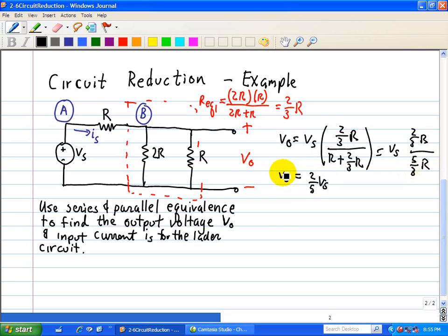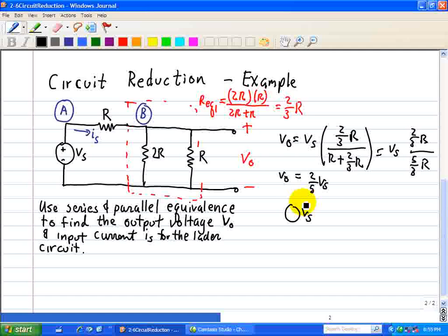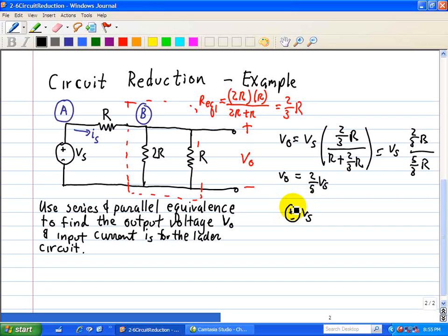Now, note when we reduce the circuit, we have this voltage divider, Vs, this plus minus, this is R, corresponding to this R, and we replace with R equivalent, R equivalent 1, as two-thirds R. And we took this circuit and evaluated V0.